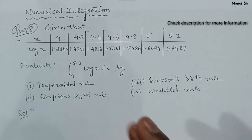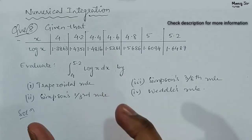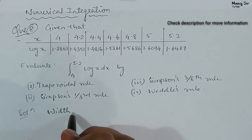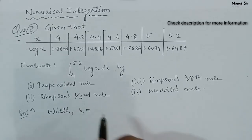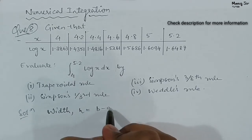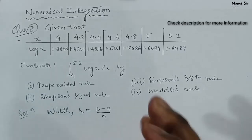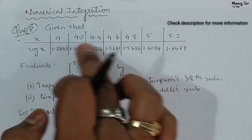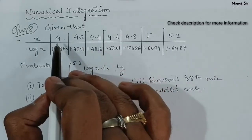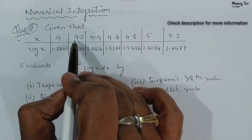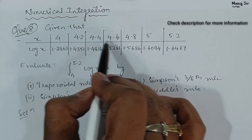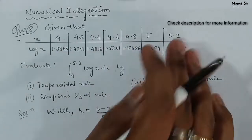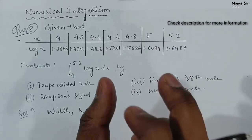First, we will write the width, that is the interval size h, given by the formula h equals b minus a upon n. From here we can see the interval size is 0.2. Here x goes from 4, then 4.2, then 4.4, then 4.6, then 4.8, then 5, then 5.2. The interval size is 0.2.